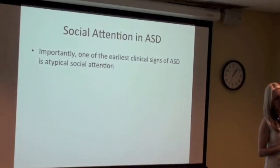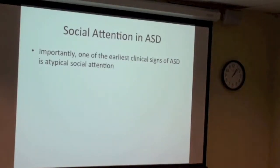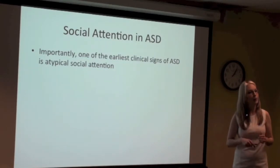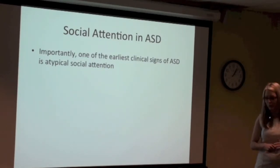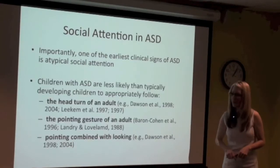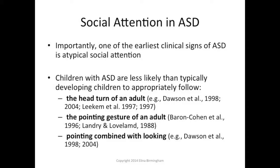What's happening in ASD? This is actually one of the earliest clinical signs of autism — an impairment or abnormality in social attention. We know that kids with ASD are less likely than typically developing kids to appropriately follow the head turn of an adult, the pointing gesture of an adult, and pointing combined with looking.